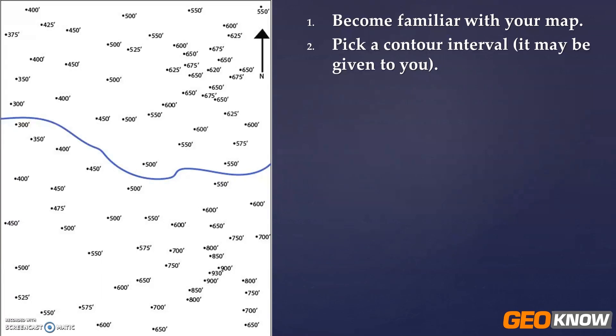So what would be an appropriate contour interval for that? Probably not like five, because then you're going to have to draw so many lines and it's going to be so crowded. Probably not a hundred, because then you're only going to have six lines and you won't have enough detail. So you want to compromise somewhere in there between 25 and 50. In our case, for simplicity's sake, we're going to go with 50.